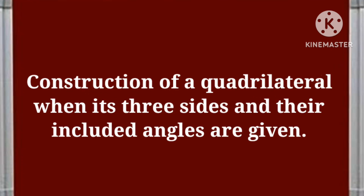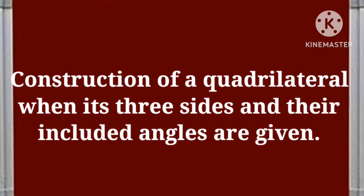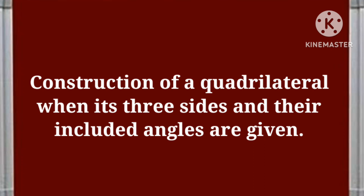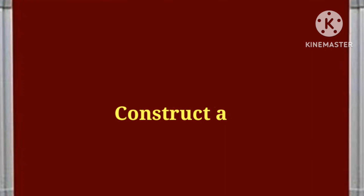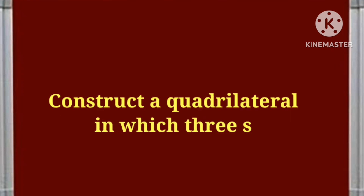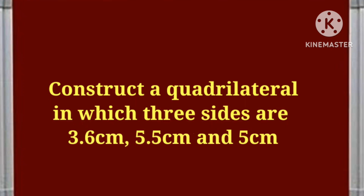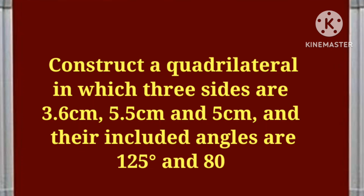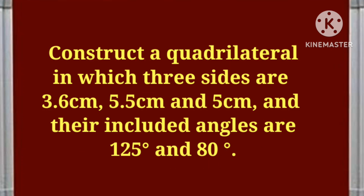The next construction is the construction of a quadrilateral when its three sides and their included angles are given. The condition is: construct a quadrilateral in which three sides are 3.6 cm, 5.5 cm, and 5 cm, and their included angles are 125 degrees and 80 degrees. Let's see how to construct it.